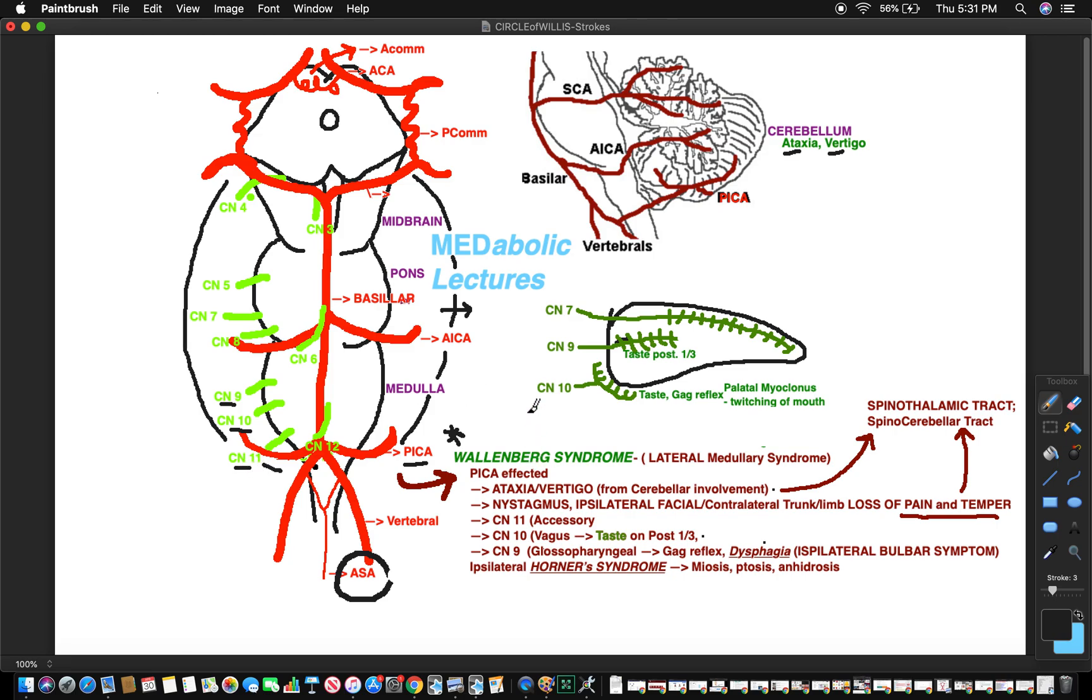That's gonna help you get the symptoms correct. If you know PICA is affected, you know it's going to involve a little bit of the cerebellum and a little bit of the base of the medulla and involve these nerves. What else? Ataxia, vertigo - because you get cerebellar involvement.